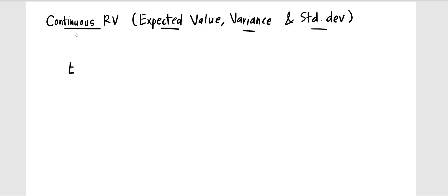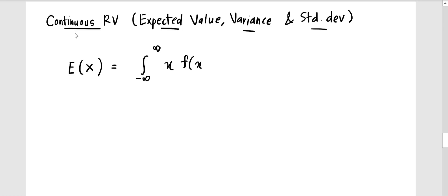We start with the expected value E(x). The formula is the integral from negative infinity to positive infinity of x times f(x) dx, where f(x) is the PDF — the probability density function of the continuous random variable.